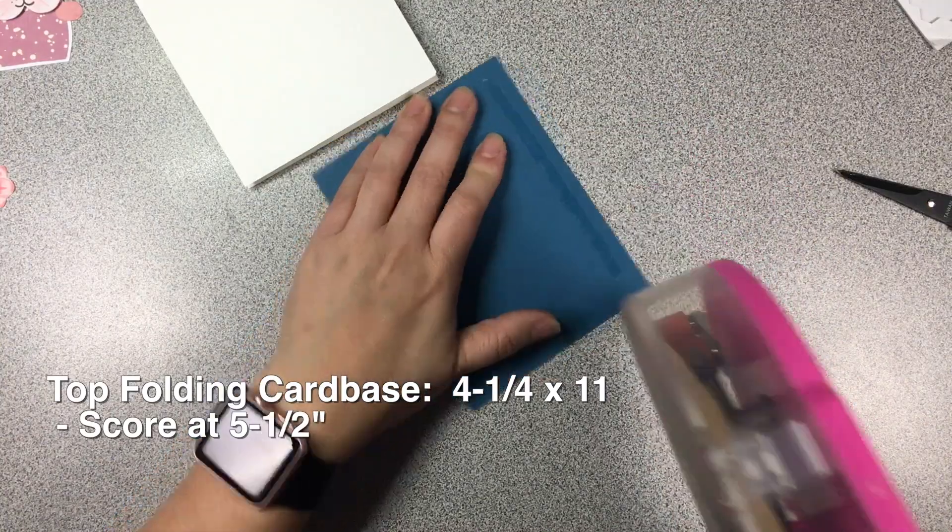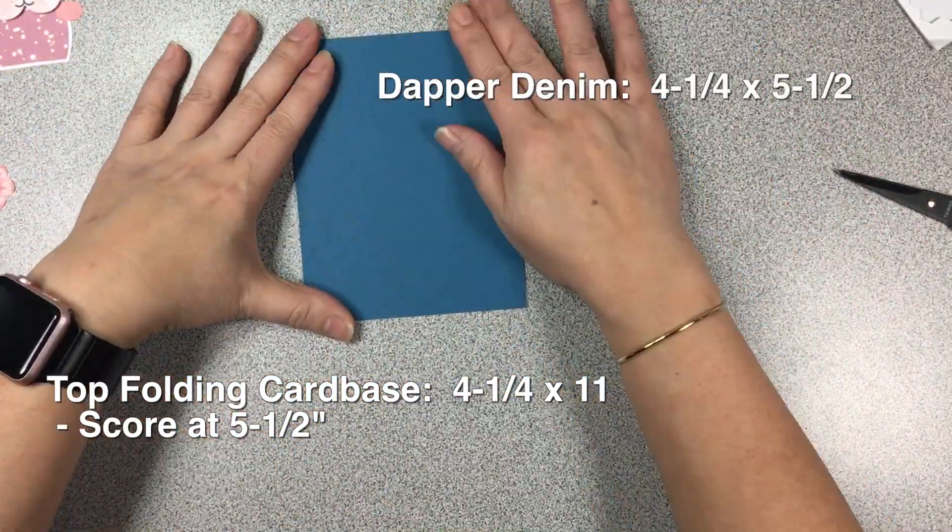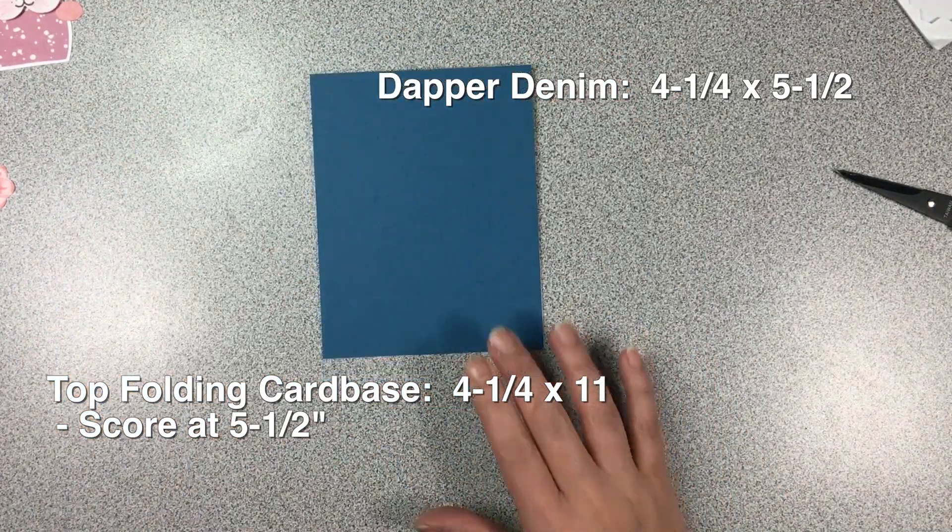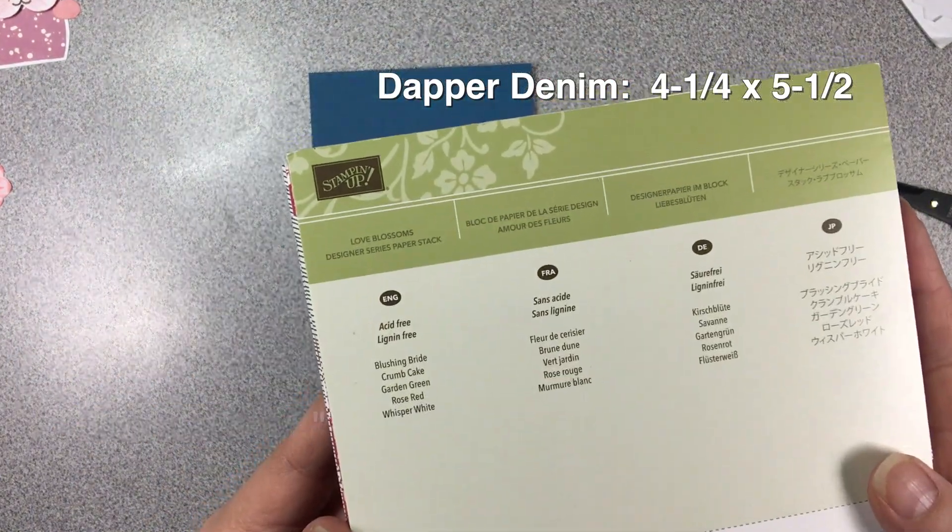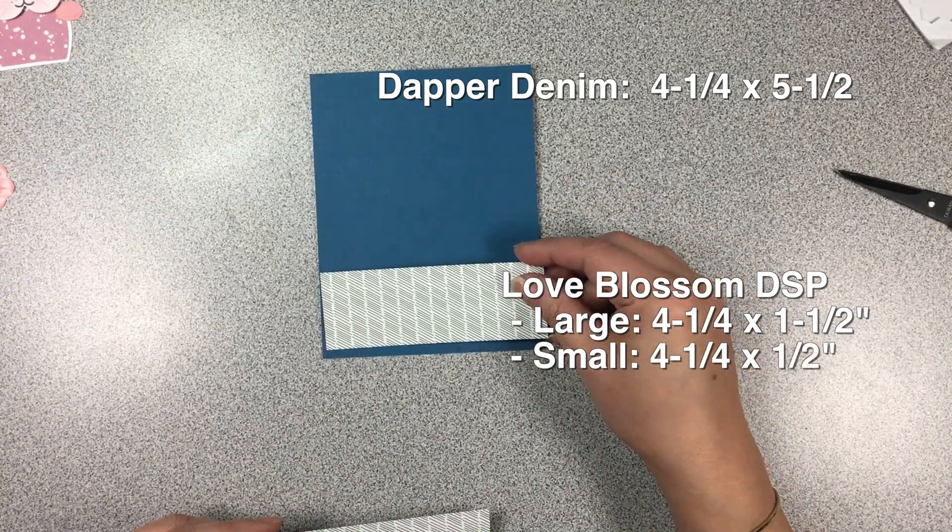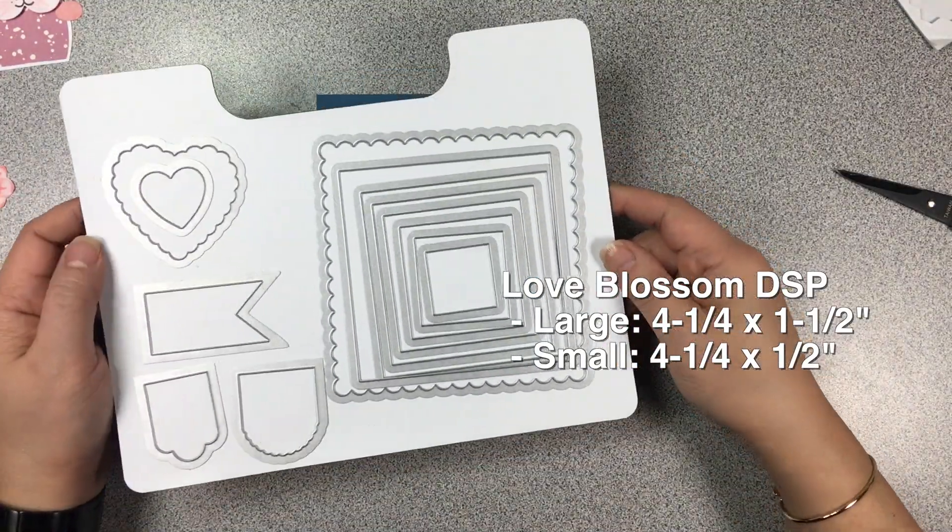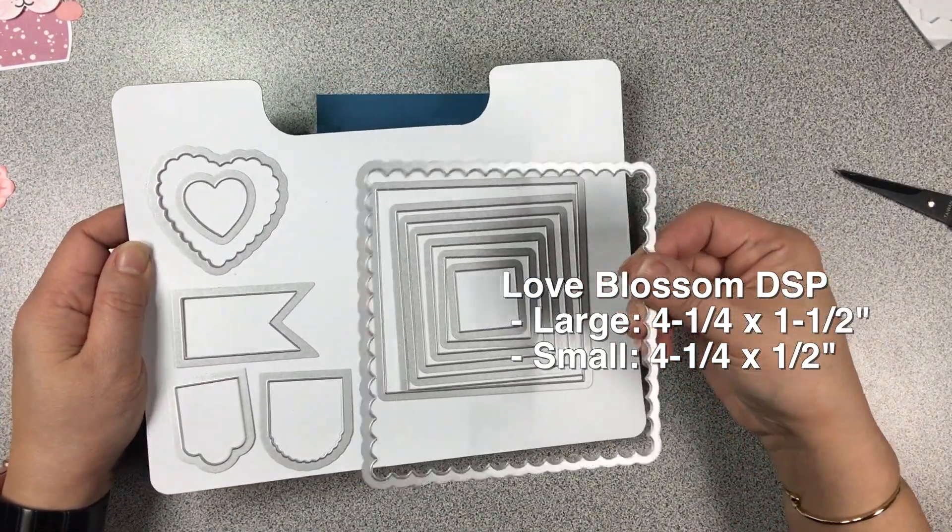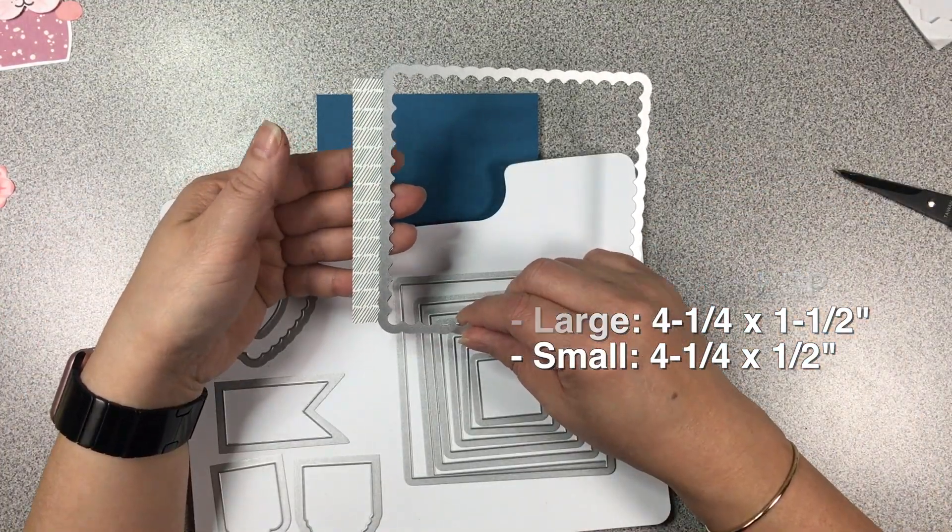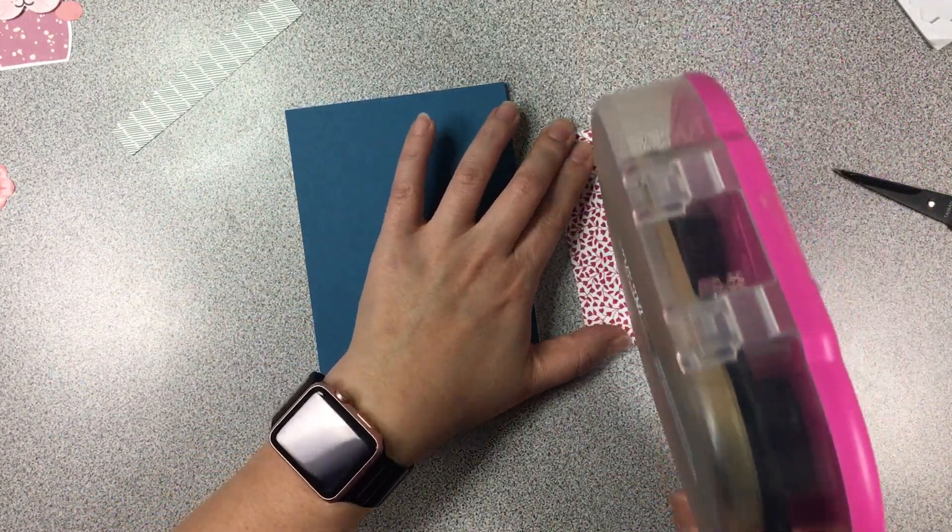All right so we're going to assemble the card top folding card base four and a quarter by eleven, scored at five and a half, and then the blue panel there I believe is Dapper Denim at four and a quarter by five and a half. And then this design paper is one and a half inches and then the smaller one is a half inch.